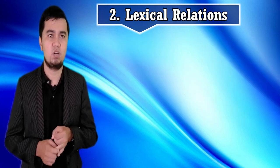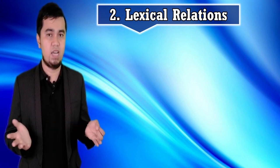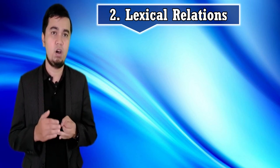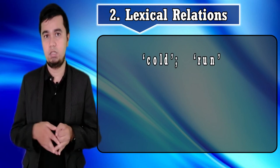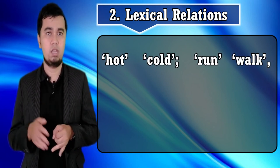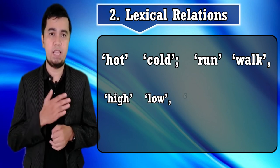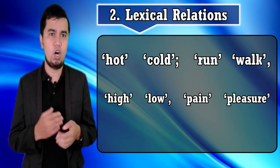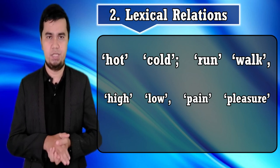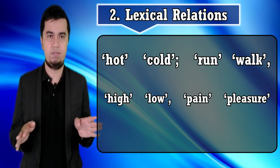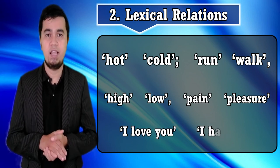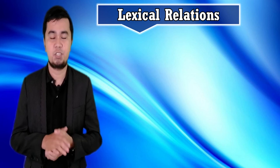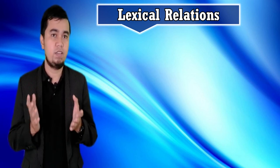Lexical relations: words do not exist by themselves but only in relation to other words. The meaning of 'hot' relates to 'cold,' 'run' to 'walk,' 'high' to 'low,' 'pleasure' to 'pain.' When we speak, we choose one word out of all available, rejecting others — for example, 'I love you' potentially versus 'I hate you.' Words function within a system of meaning. A metaphor often used for meaning is traffic lights: when a traffic light has two colors, red and green, red means 'stop' — contrasting with green, which means 'go' — so red doesn't just mean stop but also means 'not green' or 'don't go.'